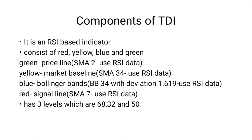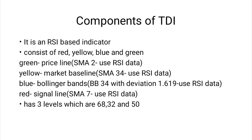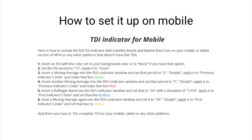There are also the blue lines, called the Bollinger Band lines or the bands, and a red line called the signal line. The TDI also has three key levels: level 68, level 32, and level 50. Level 50 is very important — you can search '50-50 trade' to understand more. At levels 68 and 32, you focus on what are called shark fins.